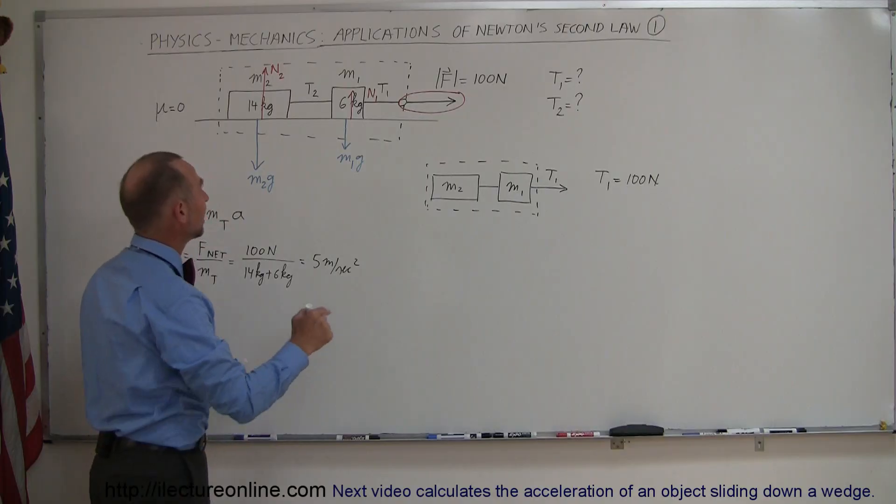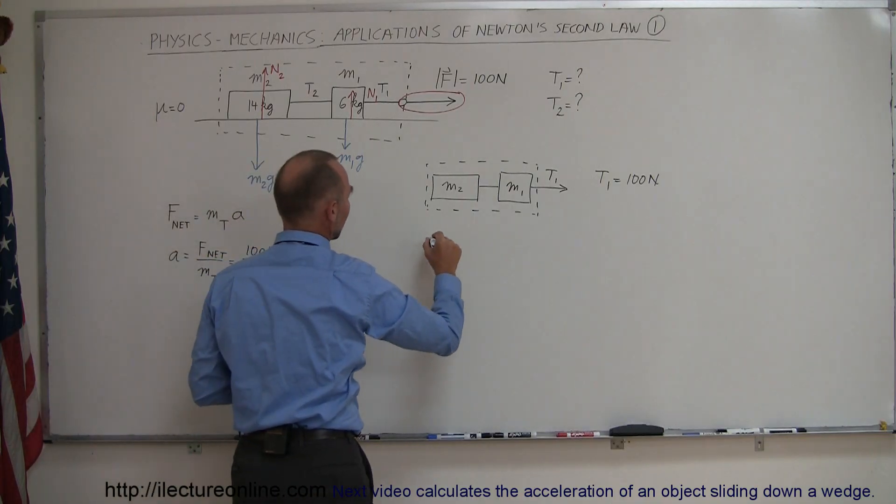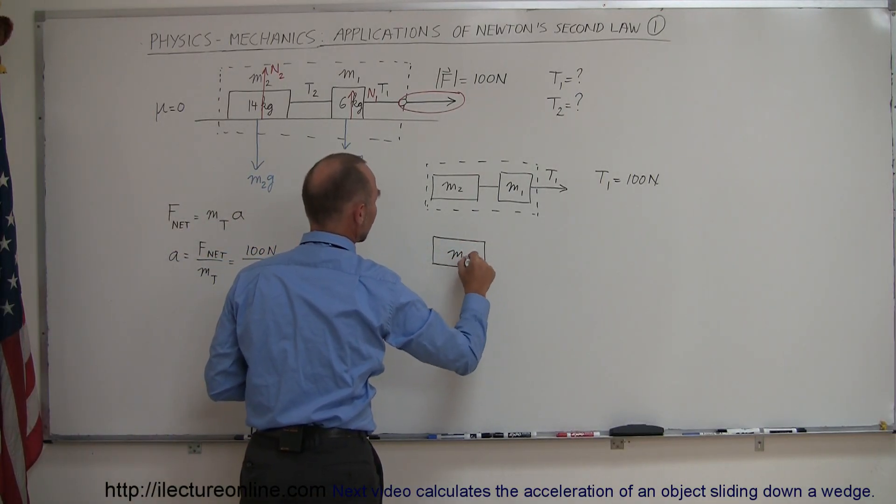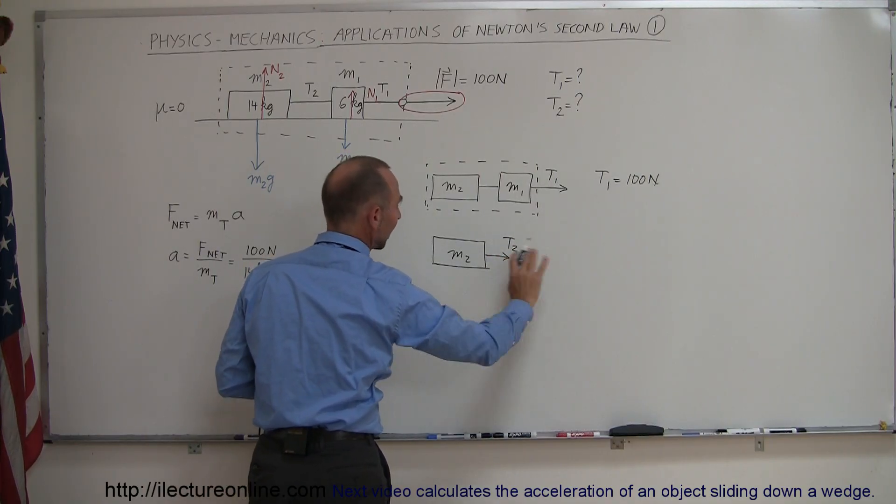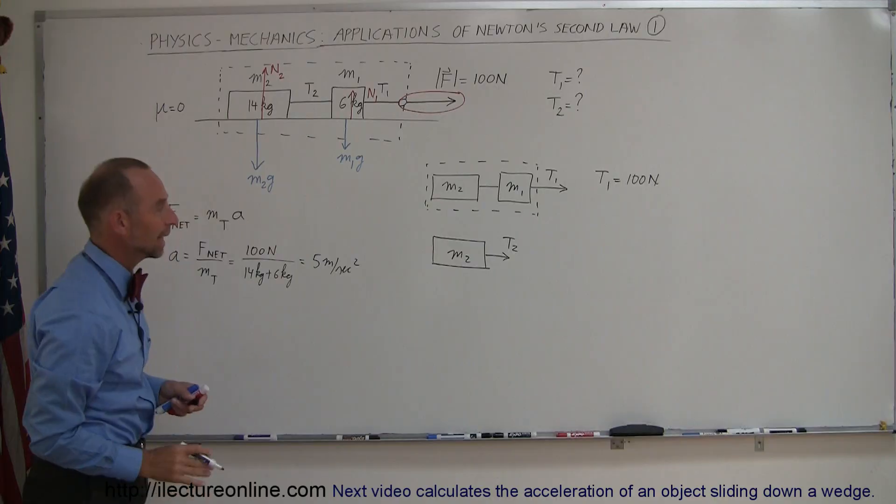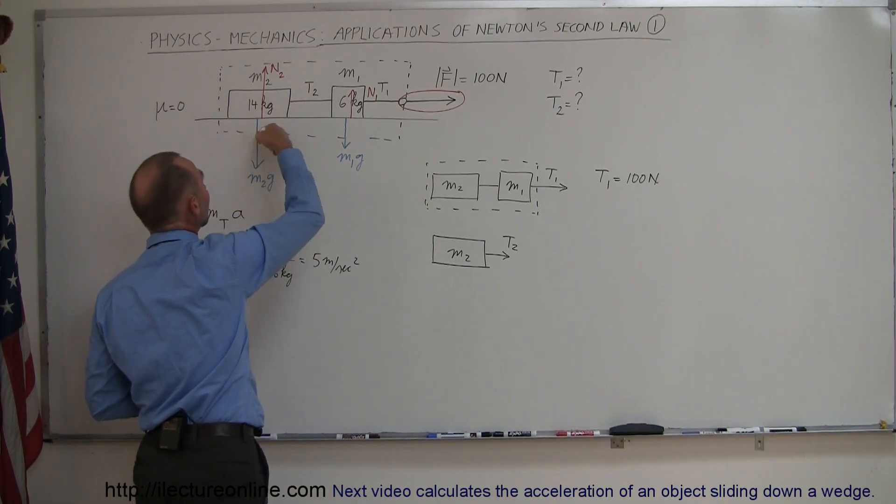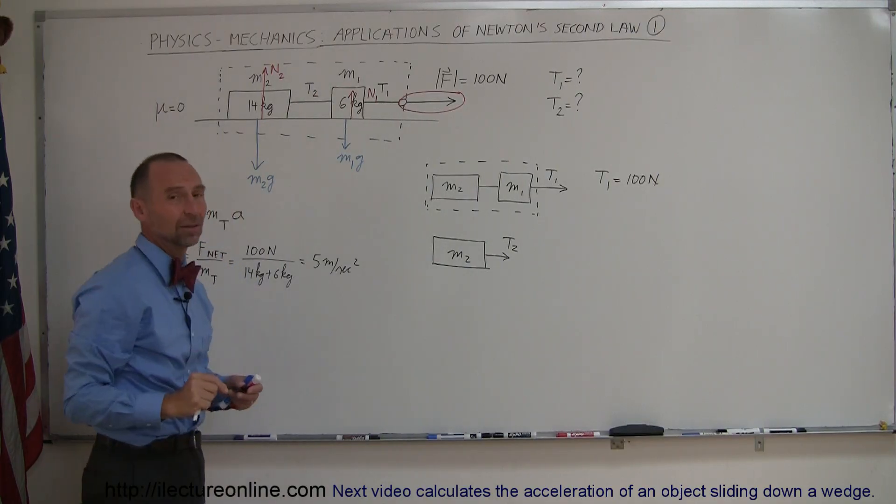Now what would be the tension in the second string? For that we're going to simply draw a free body diagram of the second mass. In this case, we simply have the second mass right here, M2, with a string attached to it. We realize we're going to have a tension to the right, accelerating M2 to the right. The tension in two only accelerates the 14 kilogram mass, it does nothing to accelerate the 6 kilogram mass.